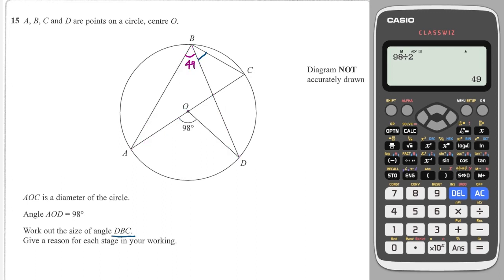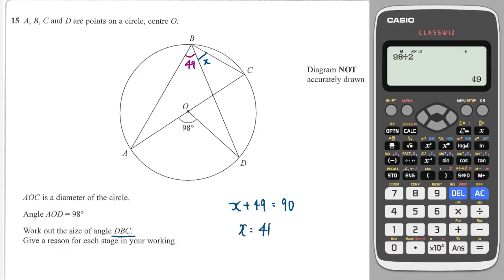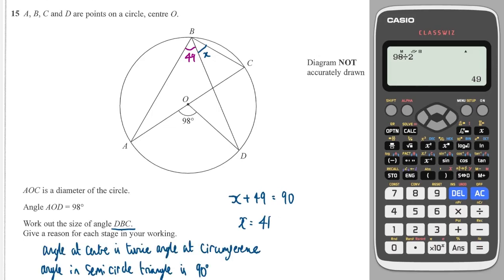Because this is a semicircle — that side is a diameter — when we have a triangle in a semicircle, the angle at the top is 90°. So angle x + 49° = 90°, therefore x = 41°. The reasons are: angle at center is twice angle at circumference, and angle in a semicircle is 90°.